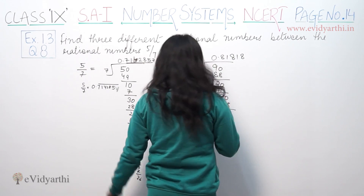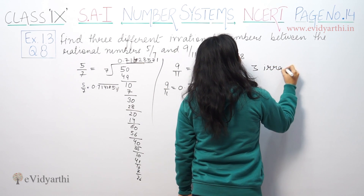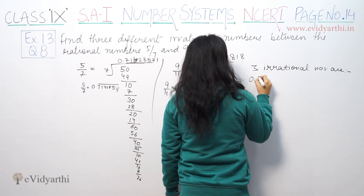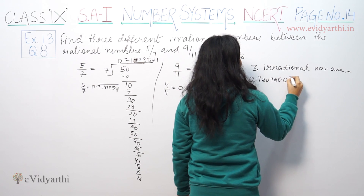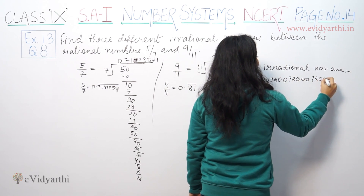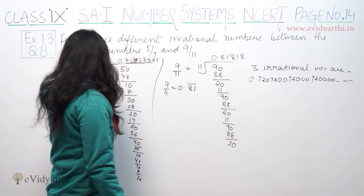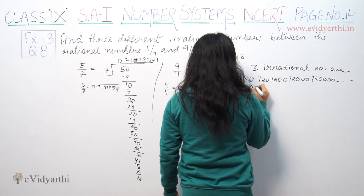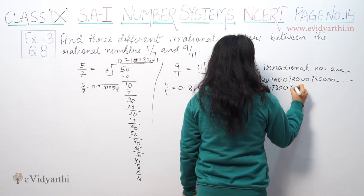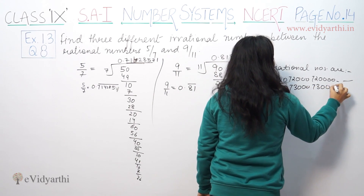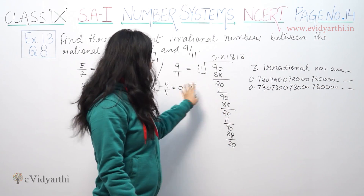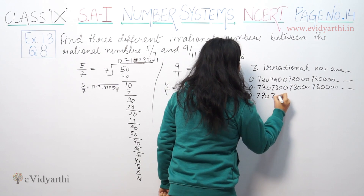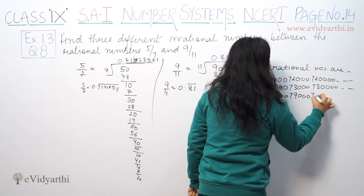We will now find three irrational numbers between 5/7 and 9/11. These can be: 0.720720072000... (non-repeating pattern), 0.724900... (non-terminating, non-repeating), and 0.730... These numbers lie between the two values and are irrational.